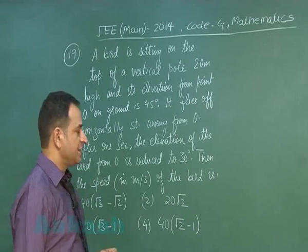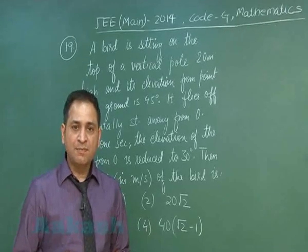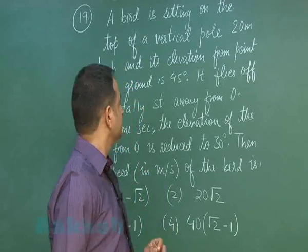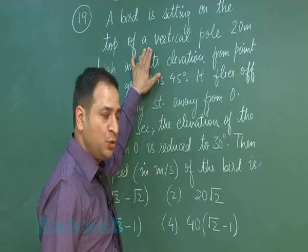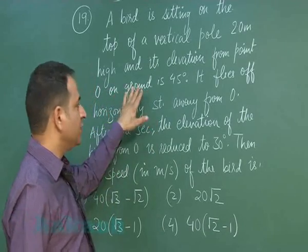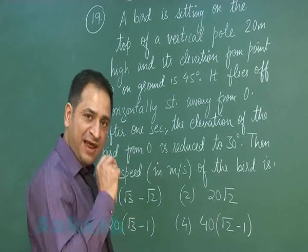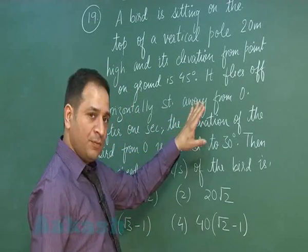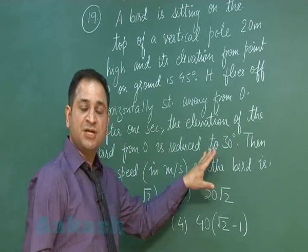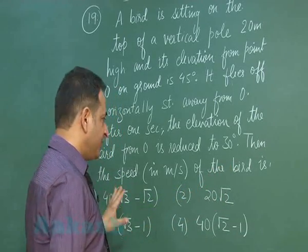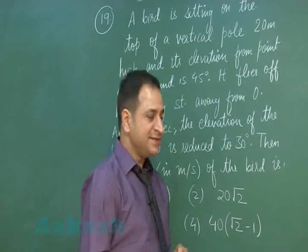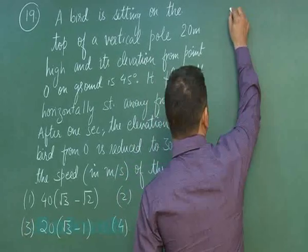Problem number 19 is a very simple problem related to simple trigonometry, specifically the chapter on height and distances. A bird is sitting on the top of a vertical pole 20 meters high, and its elevation from point O on the ground is 45 degrees. It flies off horizontally straight away from O, and after one second the elevation of the bird changes to 30 degrees. We have to find the speed of the bird.